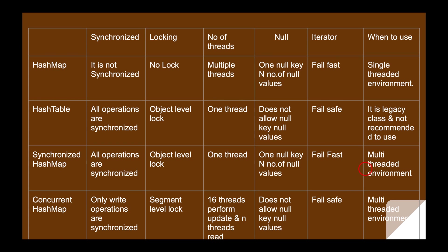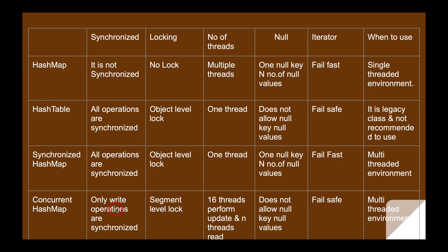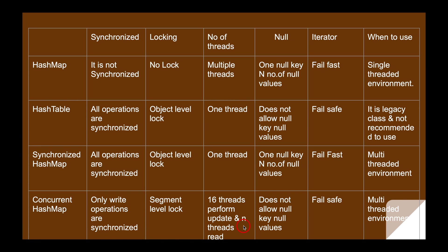ConcurrentHashMap does not synchronize the whole map — only write operations are synchronized. You can perform any number of read threads concurrently. ConcurrentHashMap creates 16 segments by default, so 16 threads can perform write operations on 16 segments at a time. For read operations there is no lock, so any number of threads can perform reads. This segment-level locking is the key advantage of ConcurrentHashMap.